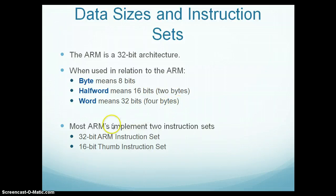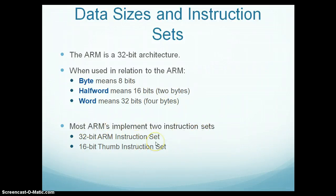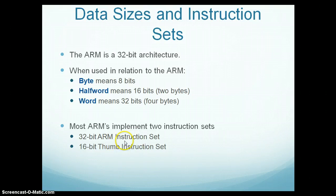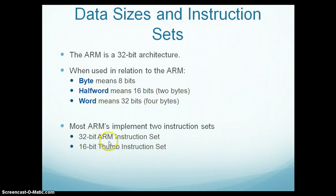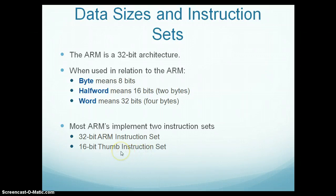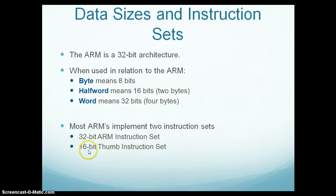Most ARMs implement two instruction sets: the 32-bit ARM instruction set and the 16-bit Thumb instruction set. ARM can operate in two modes: ARM mode and Thumb mode. When ARM is in ARM mode, its instructions will be 32-bit size, whereas when ARM operates in Thumb mode, its instructions will be 16 bits.